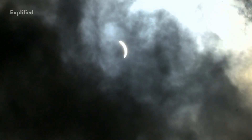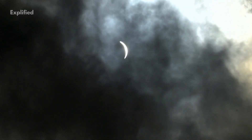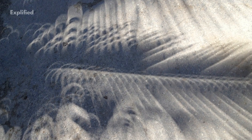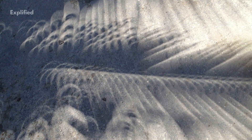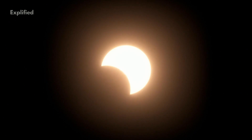The sky begins to darken as the crescent of the Sun remains in the sky. Thin wavy lines called shadow bands appear on plain surfaces on the ground. Shadow bands are caused by the irregularities in the Earth's atmosphere.